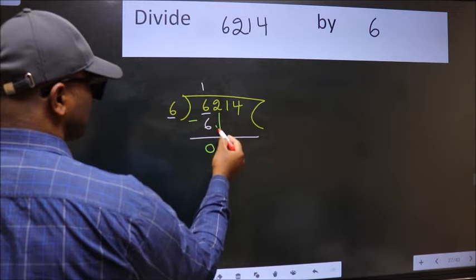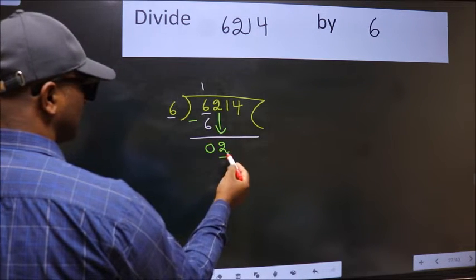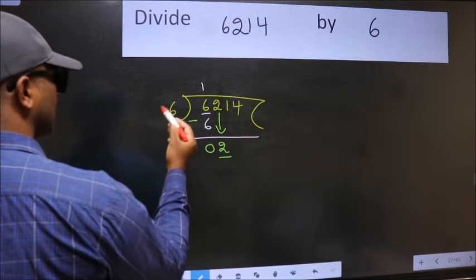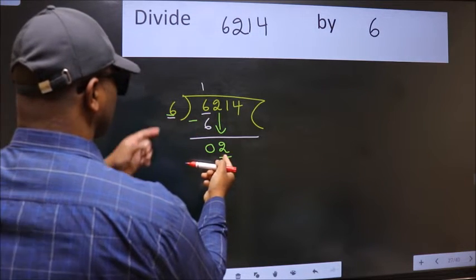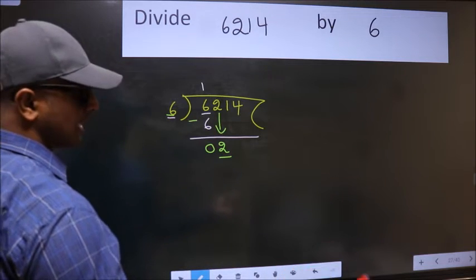After this, bring down the beside number. So 2 down. Now here we have 2 and here 6. 2 is smaller than 6, so we should bring down the second number.